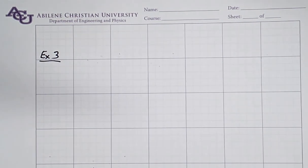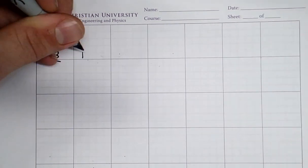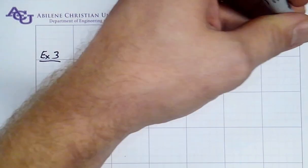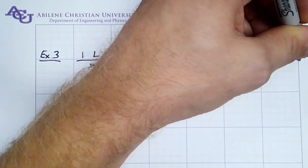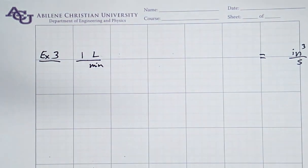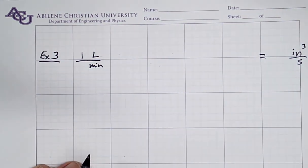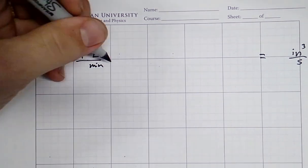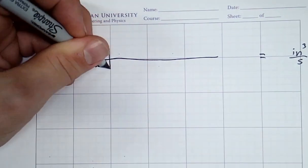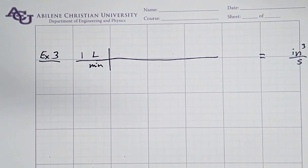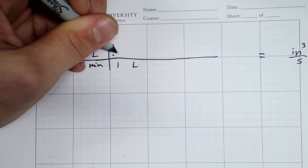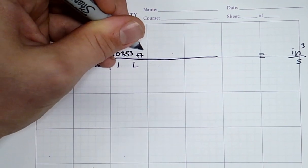One last example, then we'll call it a day. I'm going to take one liter per minute and I'm going to convert this into cubic inches per second. Maybe I'm talking about the flow of water going through a pump or leaking through a pipe. So we can convert from one system to another. Using unit conversions that I've looked up ahead of time, I'm going to write down that one liter is equal to 0.0353 cubic feet.